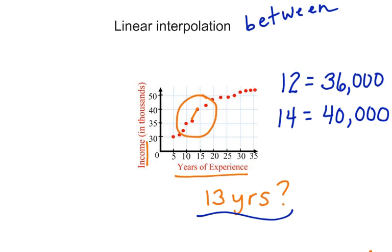We can do this a couple of different ways. We can look at it logically by looking at the distance between these two values. We could say that someone at 13 years is making about $38,000.